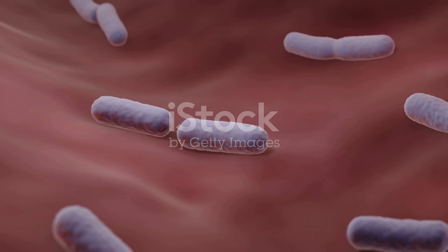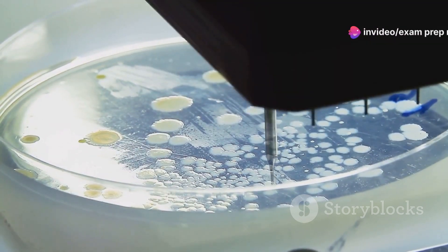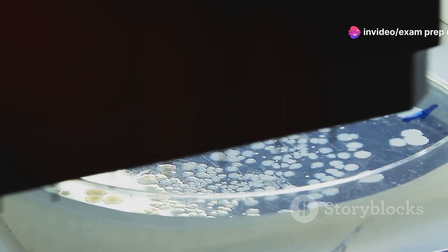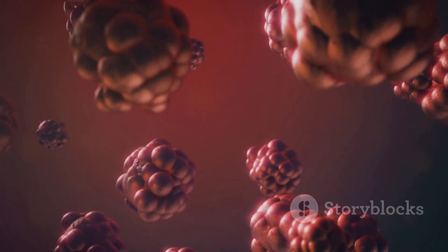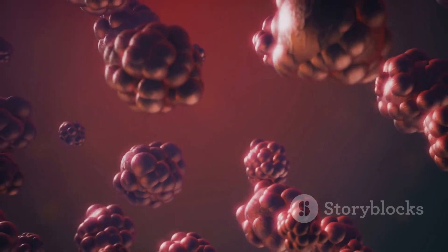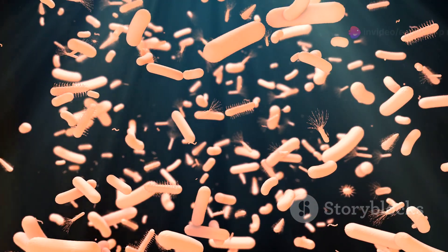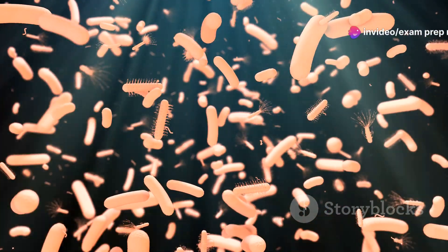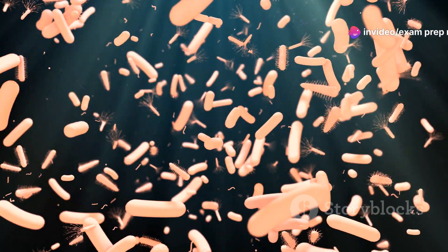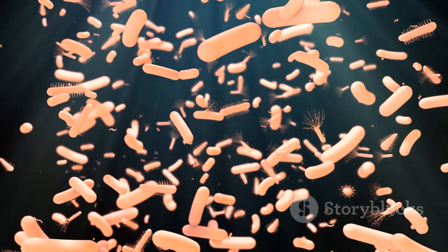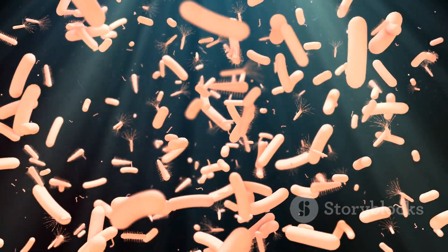Bacteria are masters of multiplication, reproducing rapidly to colonize new environments and out-compete their neighbors. Their primary mode of reproduction is called binary fission, a process that's as simple as it sounds. One cell divides into two. During binary fission, the bacterial cell replicates its DNA and then splits in half, creating two identical daughter cells. This process can happen incredibly fast, with some bacteria dividing every 20 minutes.